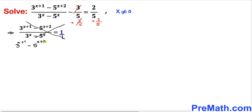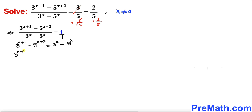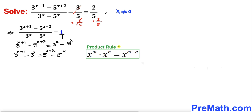If we cross multiply we get 3^(x+1) - 5^(x+2) = 3^x - 5^x. Now let's move 5^(x+2) to the right hand side and 3^x to the left hand side, giving us: 3^(x+1) - 3^x = 5^(x+2) - 5^x.